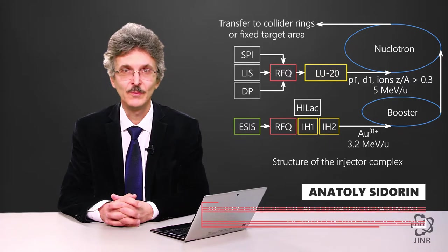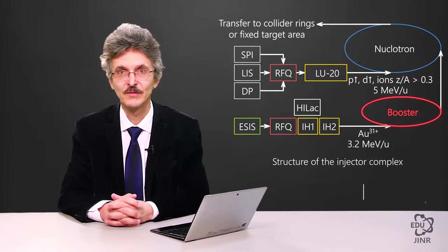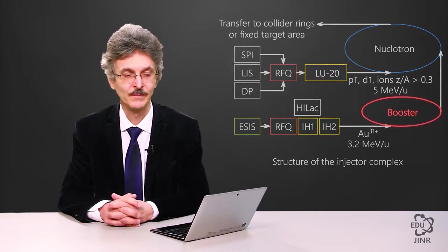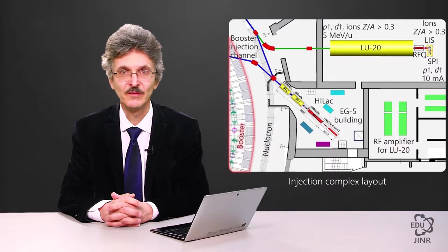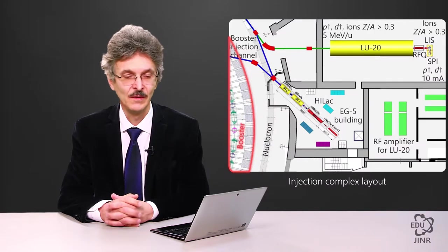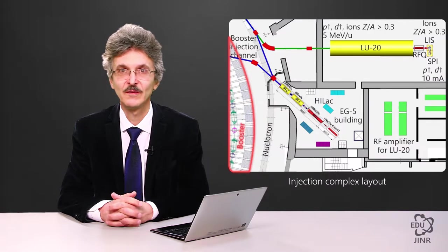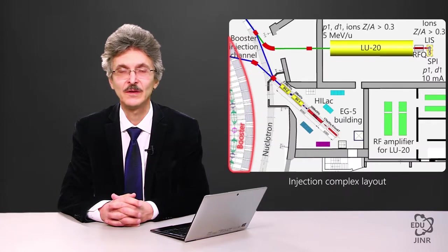After being accelerated in the linear accelerator, the beam enters the intermediate synchrotron via a special transport line, which is referred to as the so-called booster. The plan is to mount the booster inside the magnet yoke of the synchrophasotron. The yoke will provide biological protection. Accordingly, the geometric dimensions of this booster accelerator are determined by the dimensions of the synchrophasotron yoke.